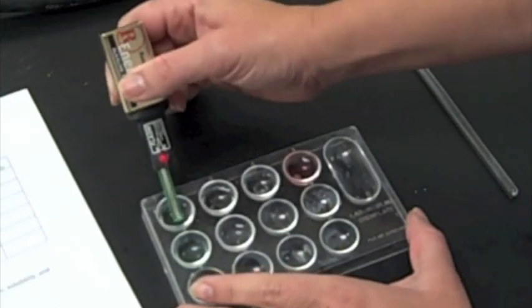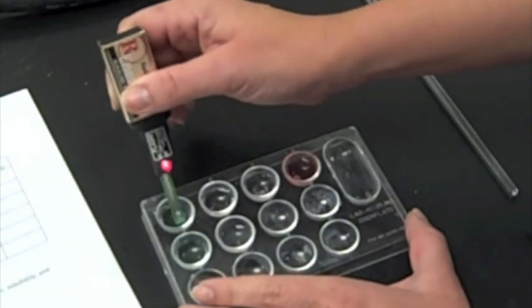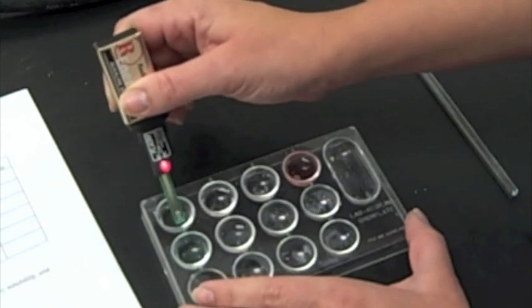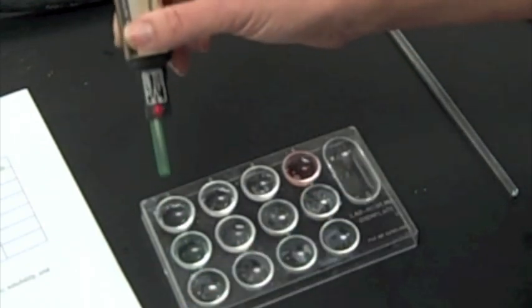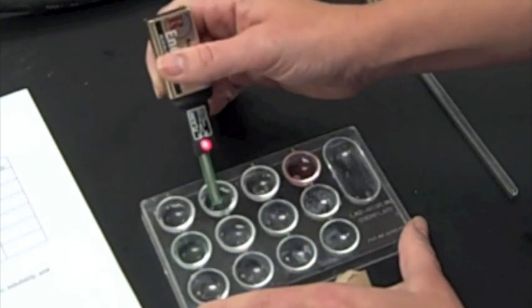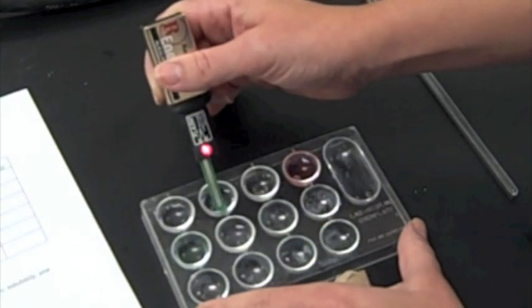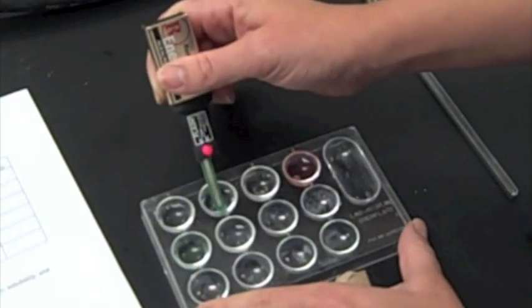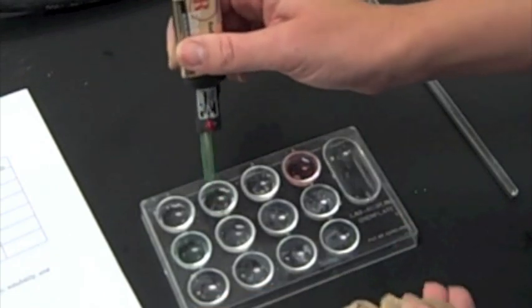Alright, so first up is sugar. Put it in the water, nothing. So, sugar is not conductive. Put it in the salt, and there's a positive test. So, salt water is definitely a conductive solution.